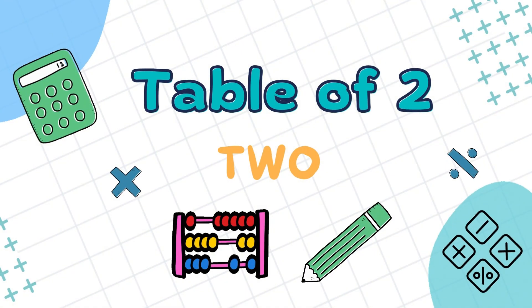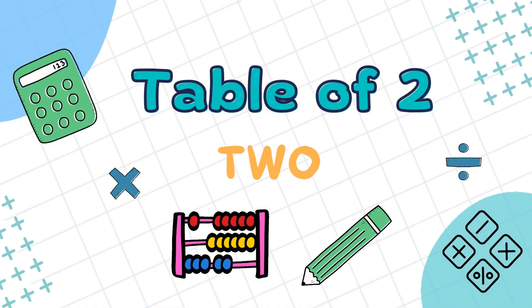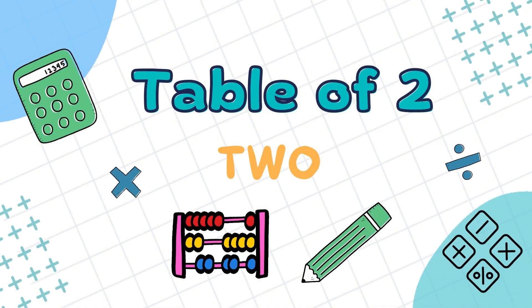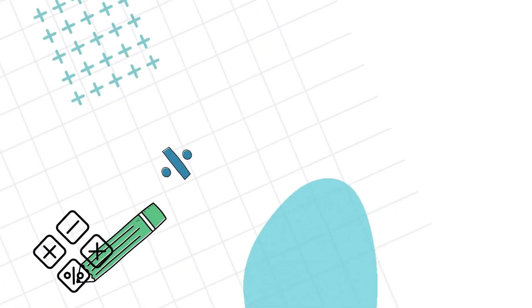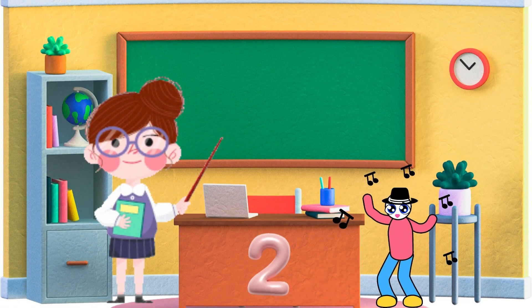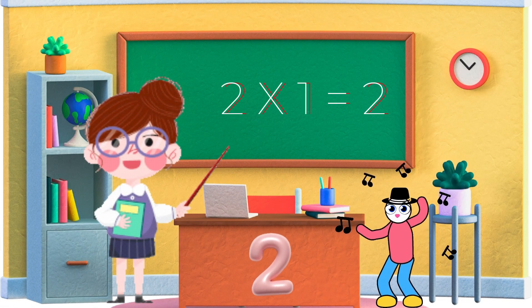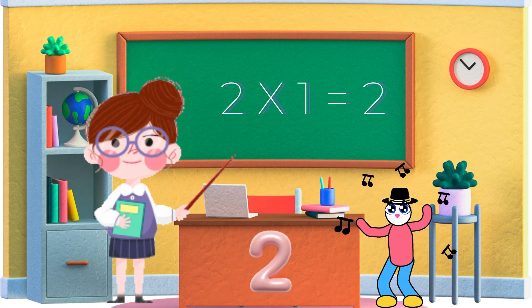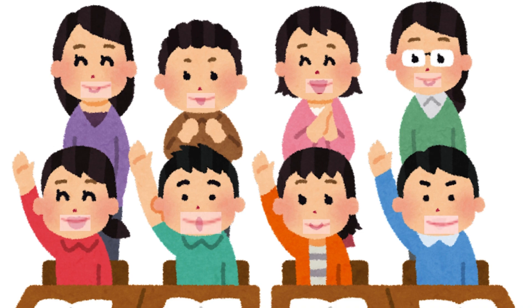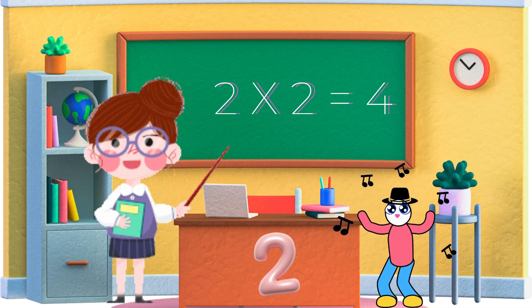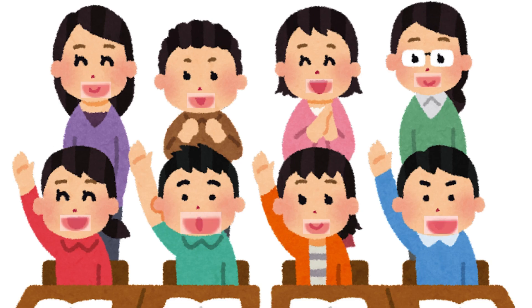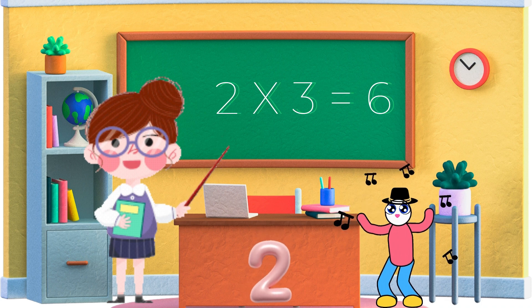Table of 2. 2 ones are 2, 2 twos are 4, 2 threes are 6.